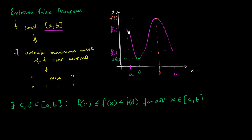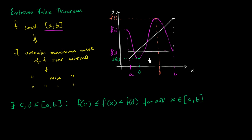We could draw other continuous functions over this closed interval. For example, for a flat function, the maximum point happens right when we hit b, and the minimum point happens at a. We could put any point as a maximum or minimum, and we'll see that this would actually be true. But let's dig a little bit deeper as to why f needs to be continuous and why this needs to be a closed interval.